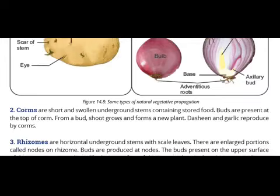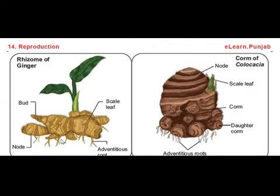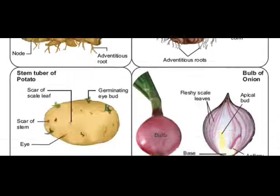Looking at the rhizome of ginger: nodes are present on it, and buds are born at the nodes. The upper parts of these buds form shoots, and the lower part produces roots. This is how ginger reproduces to form new plants.